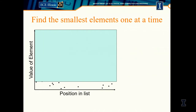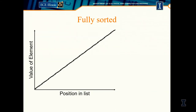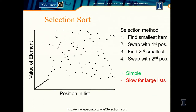Selection sort works by finding the smallest element one at a time. We block off a region already assembled — say we've placed the first 13 smallest elements in order. With the remainder of the list, we search through to find the next smallest element, move it into position, and proceed until the list is fully sorted.